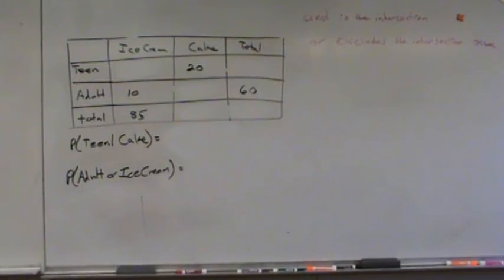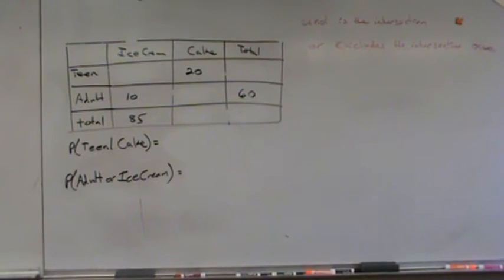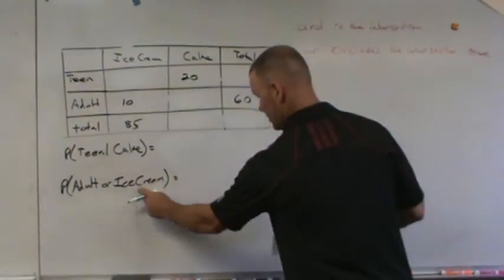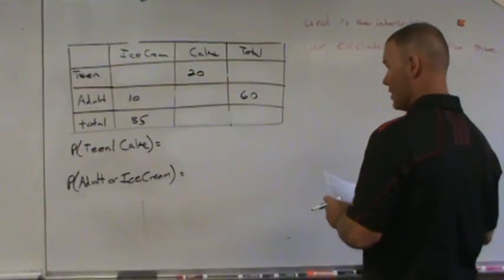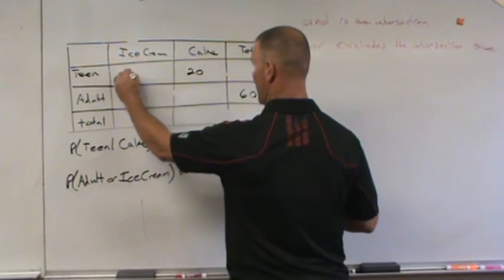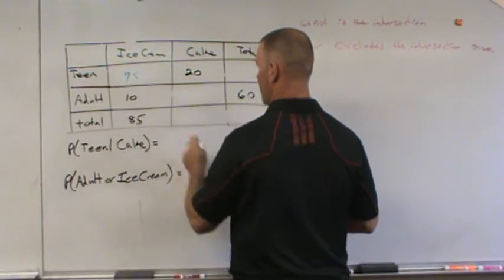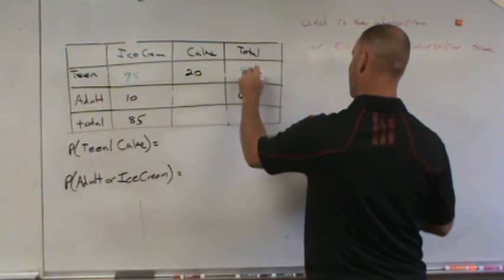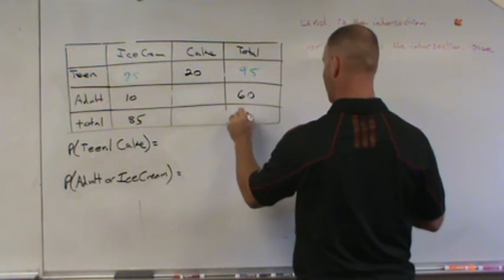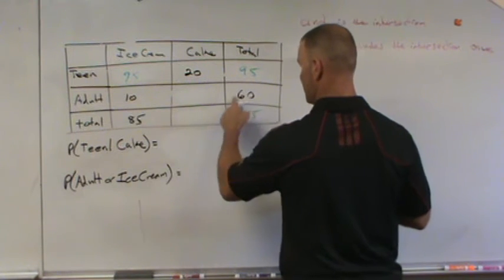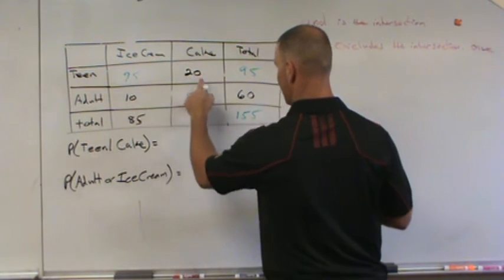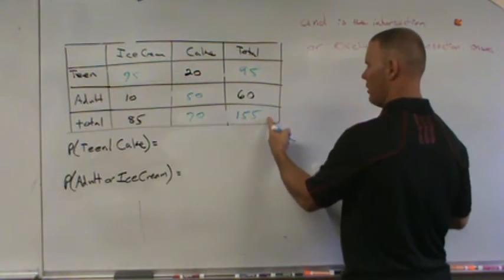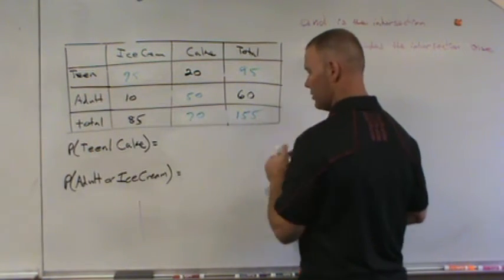And then we move on to the last one here. The reason why I'm covering the last one is because of the second statement right here. So now we go in and we fill. 85 minus 10 is 75. 75 and 20 is 95. 95 and 60, 155. 60 minus 10 is 50. 20 and 50 is 70. If you add 85 and 70 you should get 155.